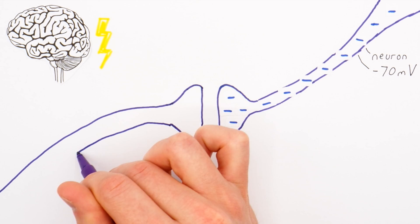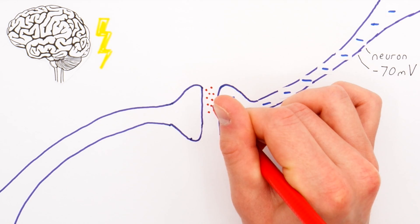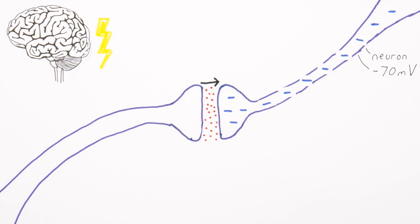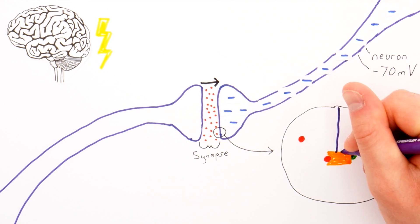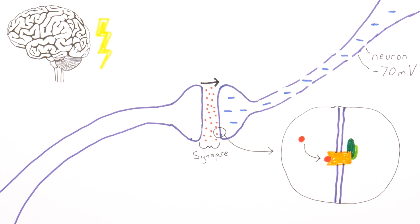Neurons can communicate with each other by neurotransmitters diffusing across a space called a synapse. Once neurotransmitters reach the next neuron, they bind to receptors where one of two things can happen: something called an excitatory post-synaptic potential, or something called an inhibitory post-synaptic potential.